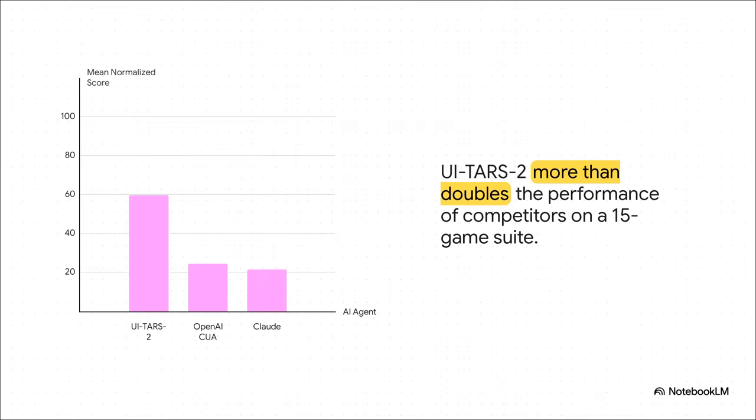UITRS2 hits a mean normalized score of almost 60. Now, that is more than double the score of the leading agents from OpenAI and Anthropic. This isn't just a small improvement. It shows a real, genuine ability to learn and execute complex strategies in a constantly changing environment.